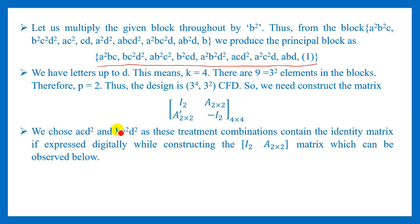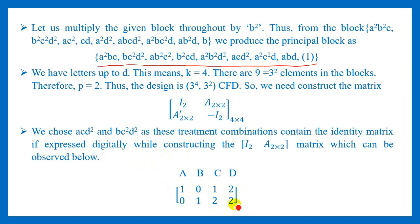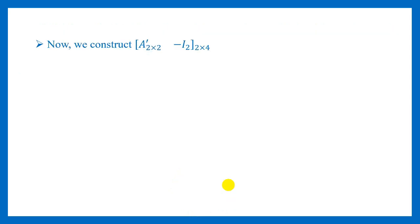We choose ACD² and BC²D². Now we express these treatment combinations digitally to construct our matrix [I | A]. ACD² expressed digitally is 1 0 1 2, and BC²D² expressed digitally is 0 1 2 2. We get our identity matrix of order 2 — that is 1 0 / 0 1 — under the columns A and B, and the remaining columns form our matrix A, which is [1 2 / 2 2].